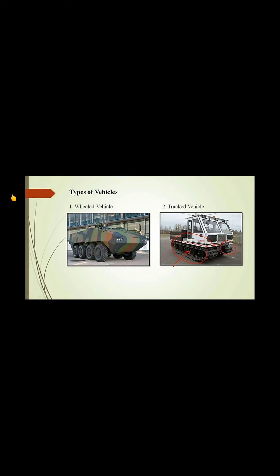We refer to military vehicles for the design of our bridge slabs, as these are the live loads. Pressure P equals force divided by area. When contact area is more, pressure is less — so in a tracked vehicle you have less pressure, whereas in a wheeled vehicle you have more pressure. These loads are used for the design of slabs.